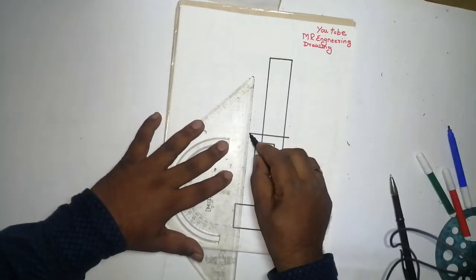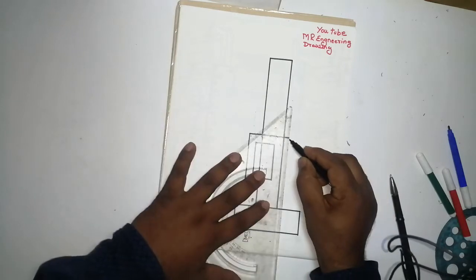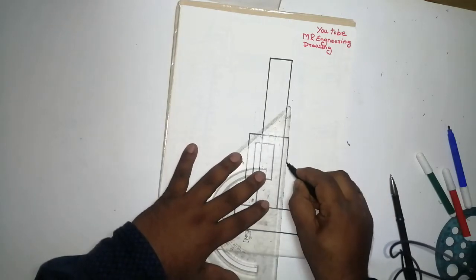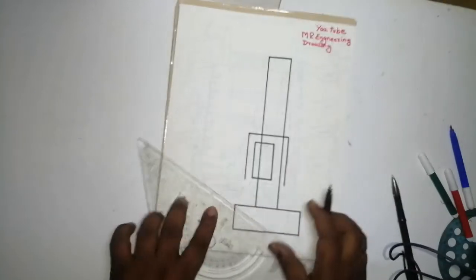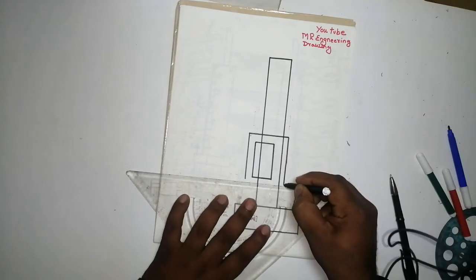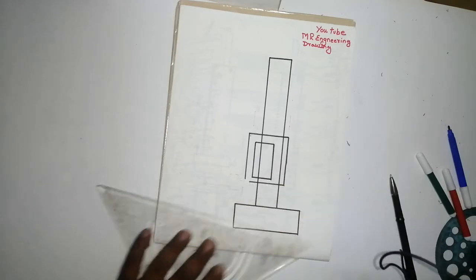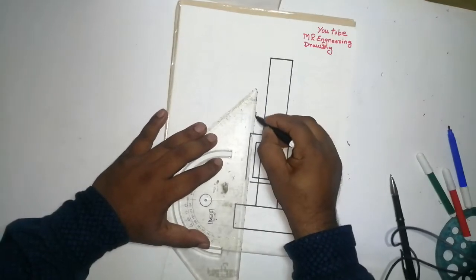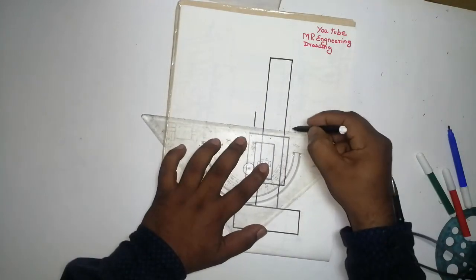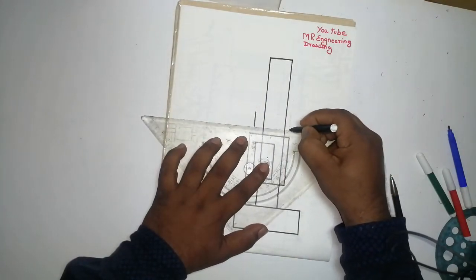Again, I have taken like this. Again, I have taken like this. This joint will come like this. After that, one more box I have written like that.